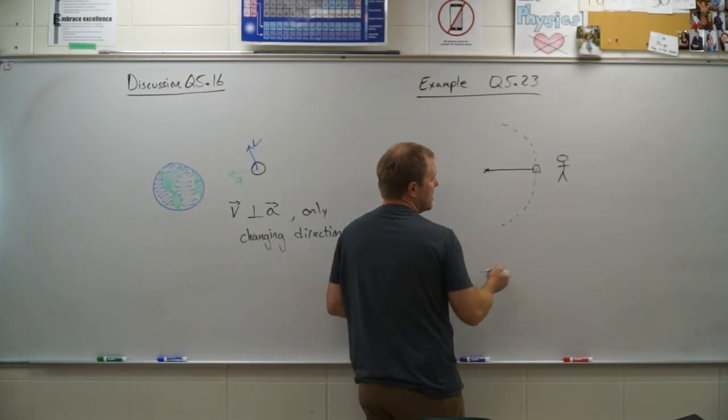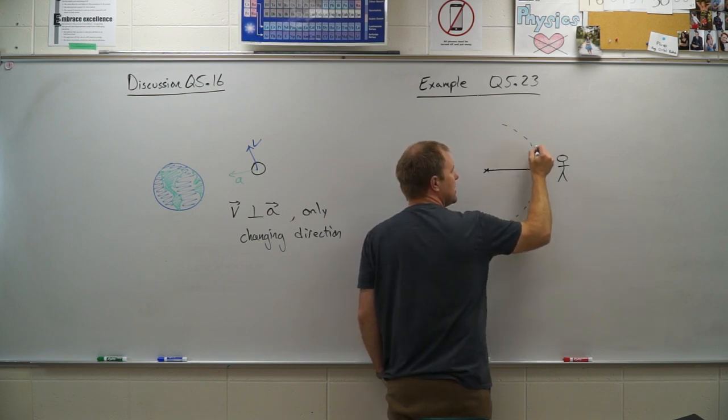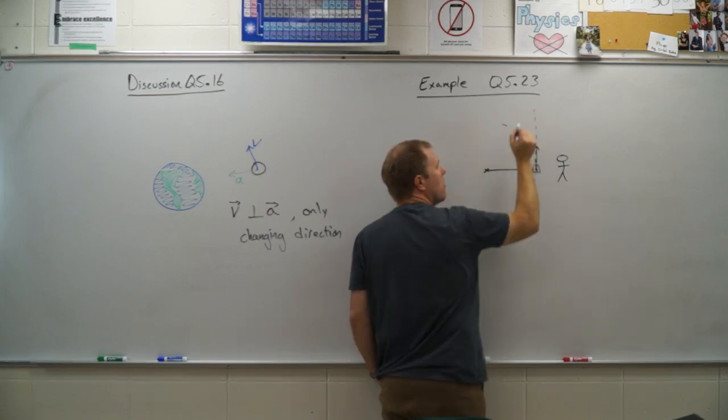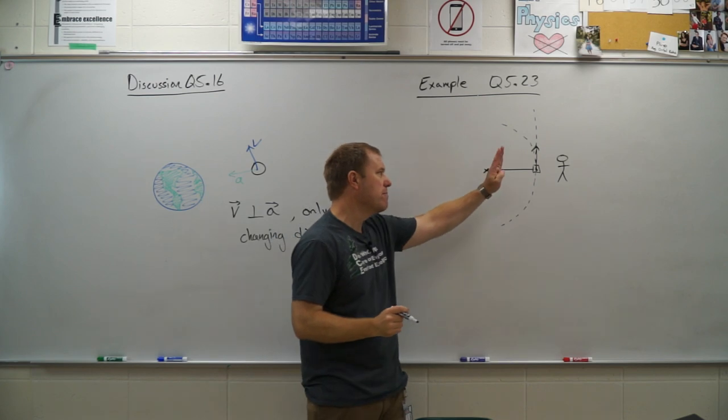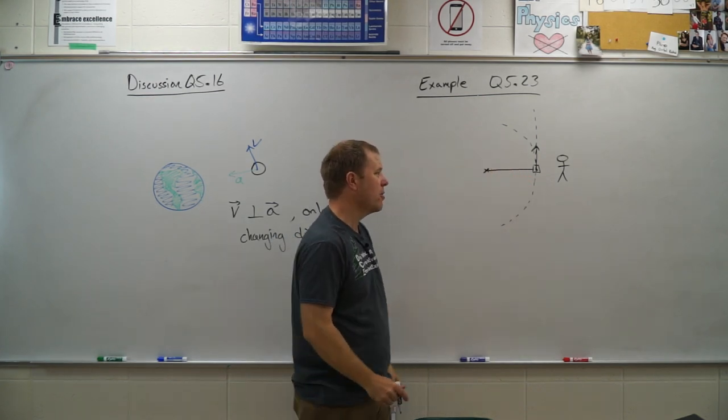So the reason for this is at that point when the stopper is right in front of the student, the velocity is in this direction. So it would continue on in that direction as soon as we remove the force causing that acceleration to make it go in a circle.